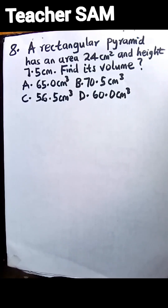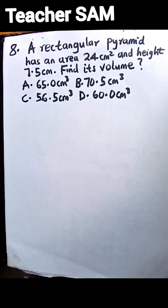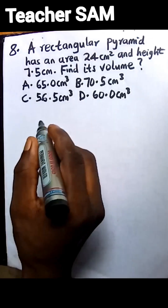We have option A: 65.0 cm cubed. Option B: 70.5 cm cubed. Option C: 56.5 cm cubed. Option D: 60.0 cm cubed. So let's get down to business.